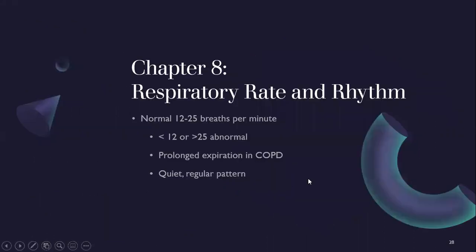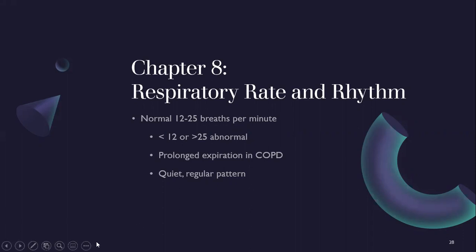Respiratory rate: normal is 12 to 25 — not 12 to 20 as commonly thought. Less than 12 or greater than 25 is abnormal. Breathing should be regular — inspiration as long as expiration. In COPD you'll see a prolonged expiration. There's a chart in the book showing different irregular patterns like Kussmaul's respirations or periods of apnea.